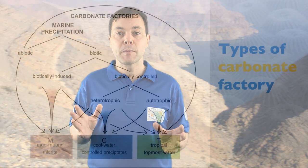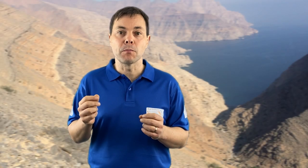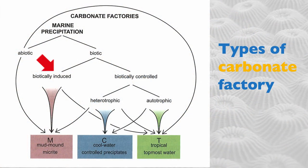Going back to the concept of carbonate factory, we see that we can have three types of factories. One is known as the M factory — M stands for mud mounds or micrite. Micrite is a very fine carbonate mud. The M factory is controlled or dominated by biotically induced precipitation.